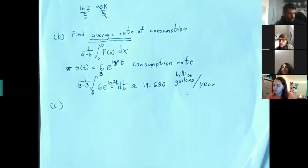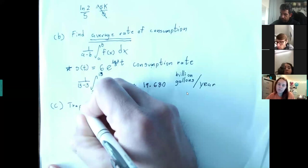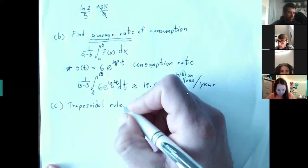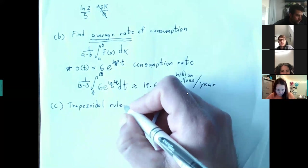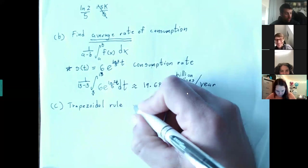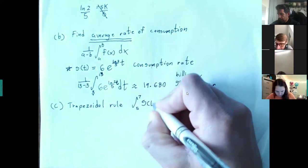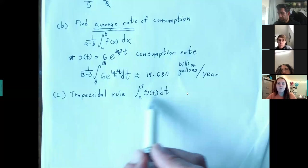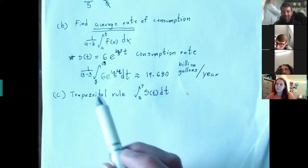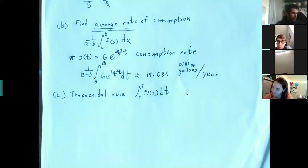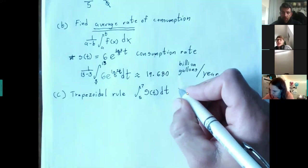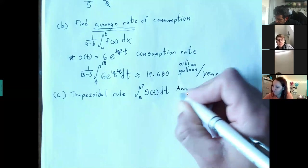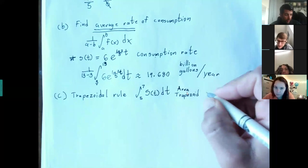Let's use the trapezoidal rule for Part C. Basically we're going to use the trapezoidal rule to approximate the integral. Remember, this represents the area under the curve between 5 and 7, and I'll use the trapezoidal rule to approximate that. Do you guys remember the formula for the area of a trapezoid? It's one-half times base one plus base two times height. They won't give you that on the AP exam.